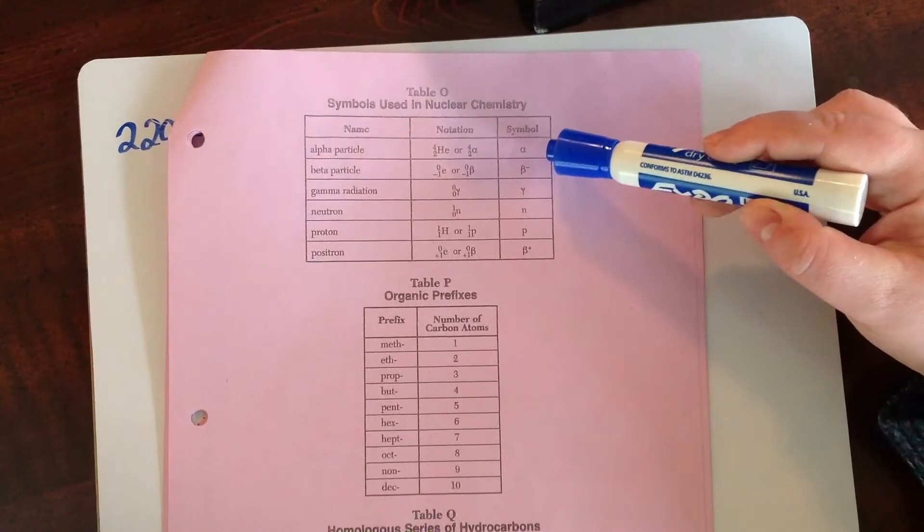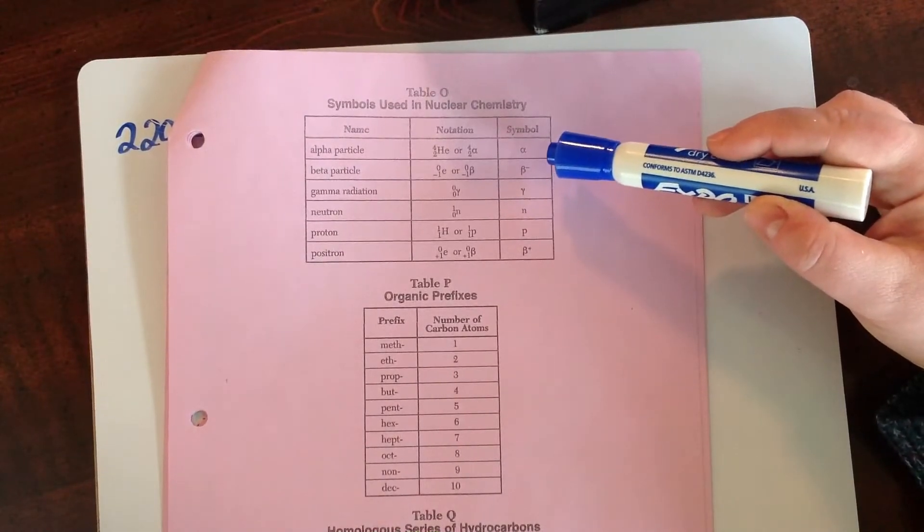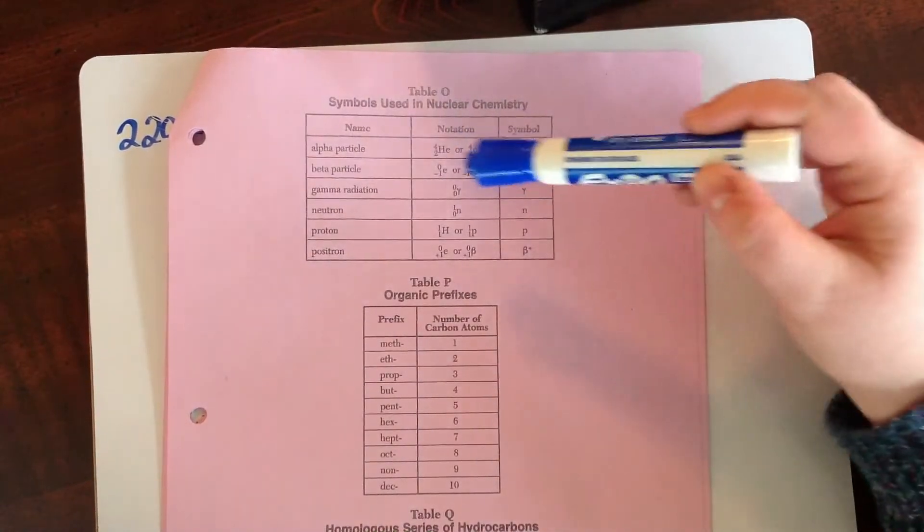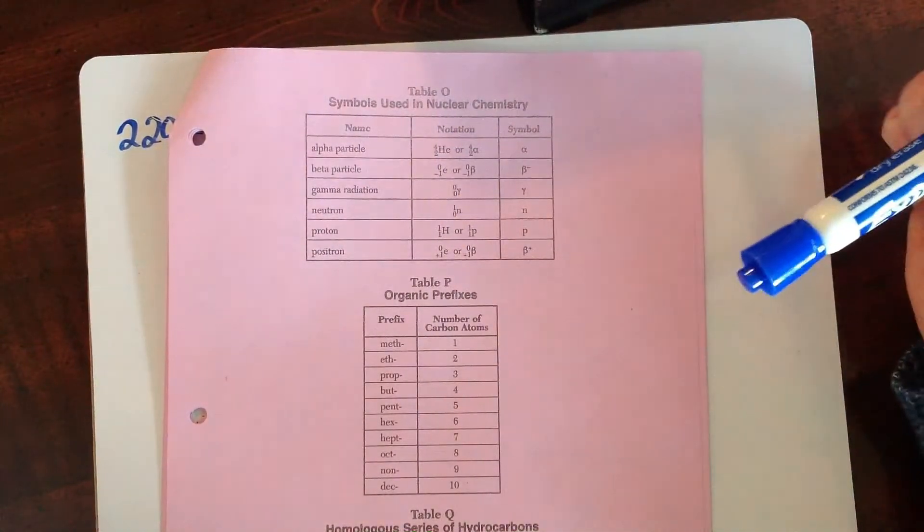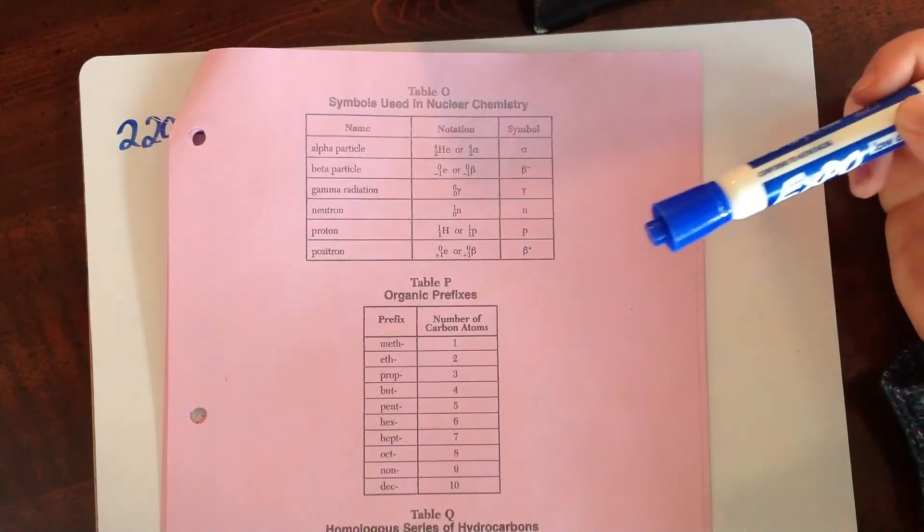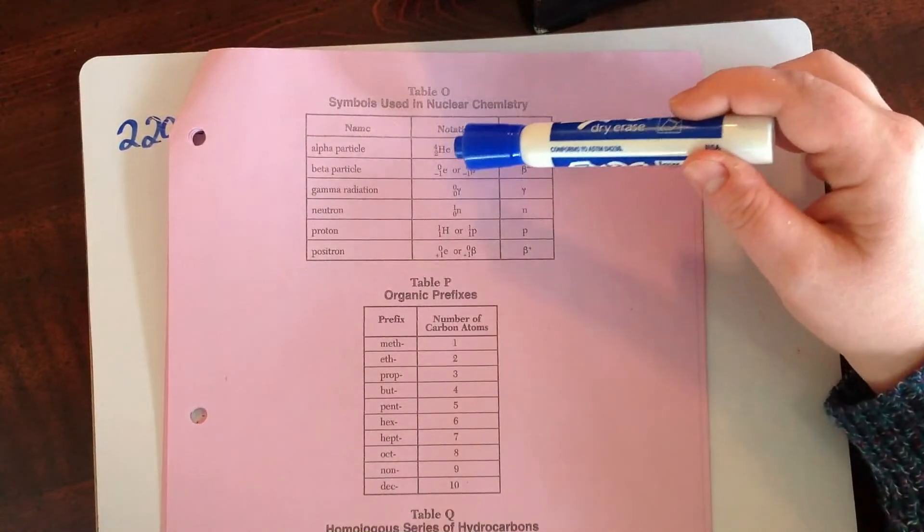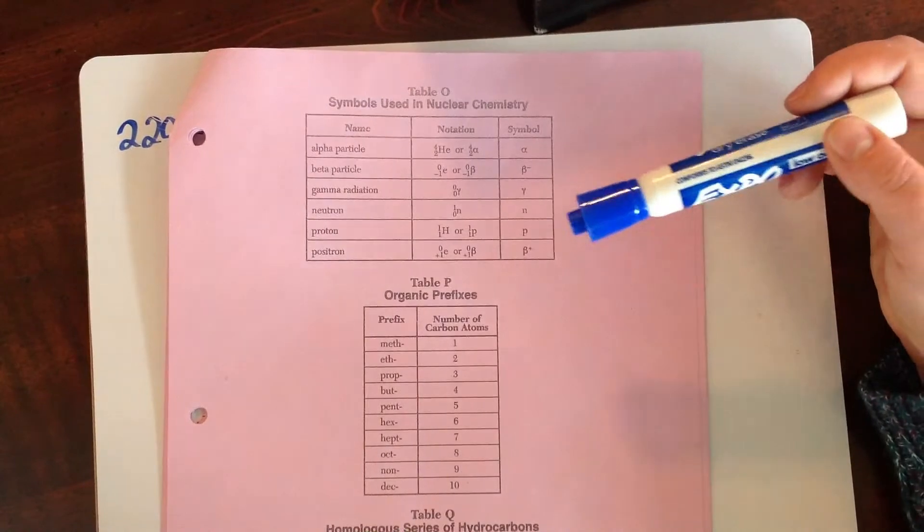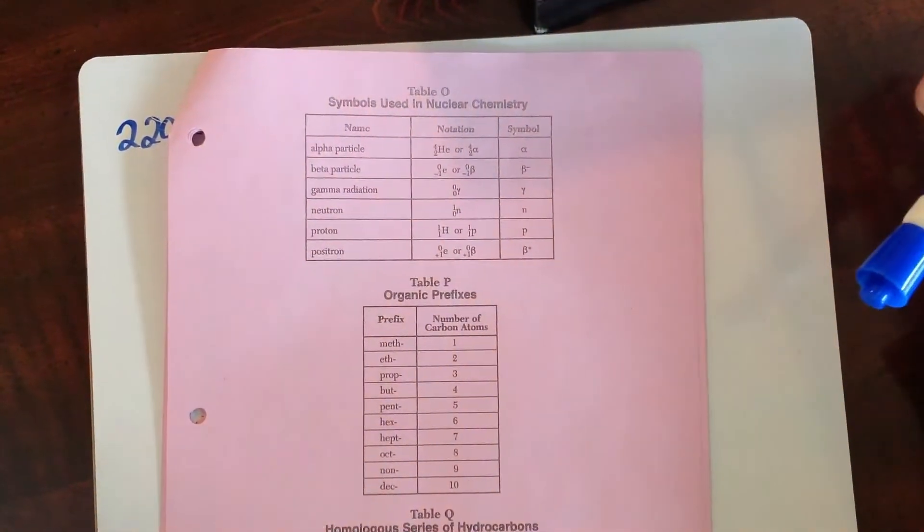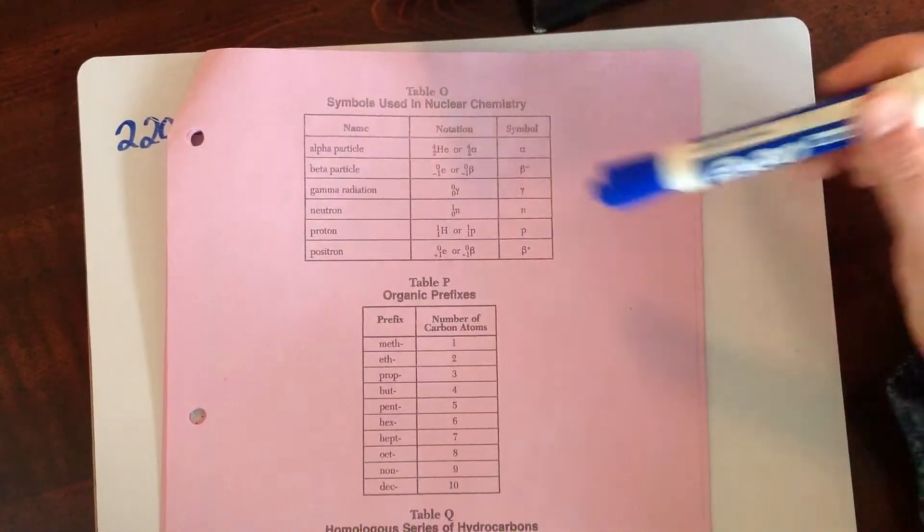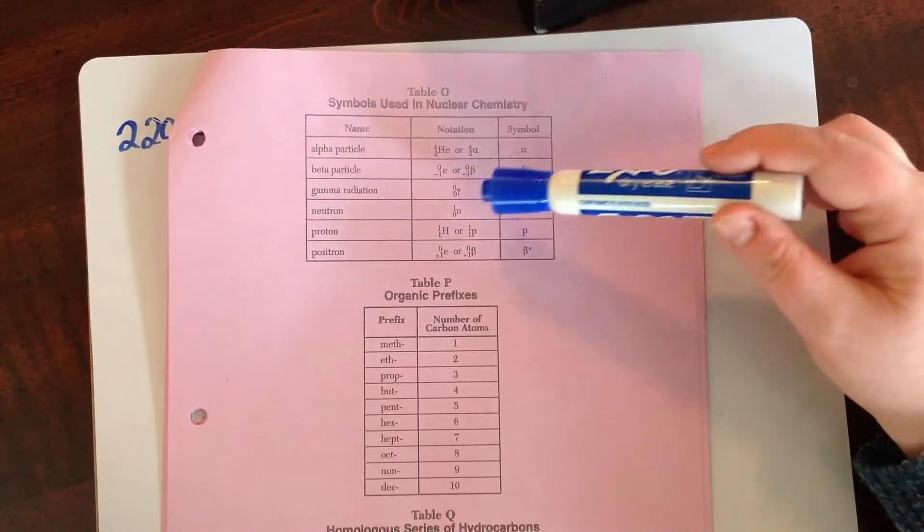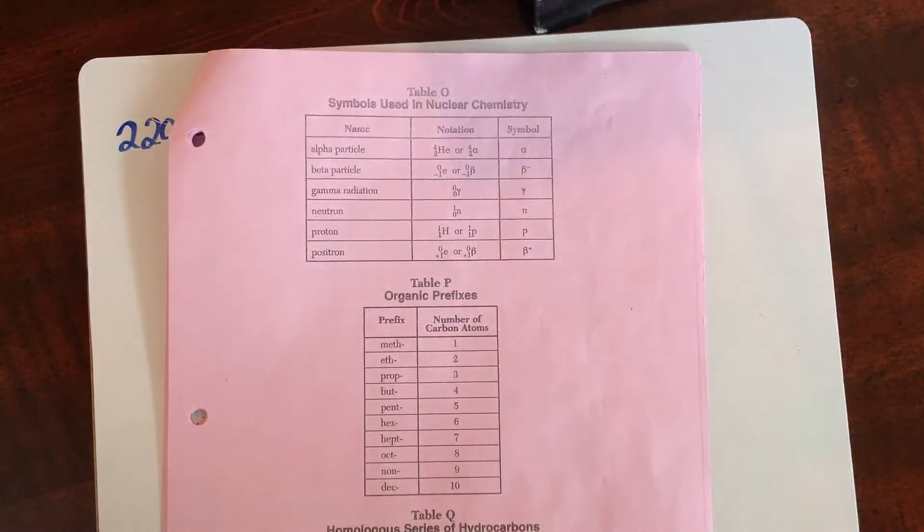The beta particle is essentially an electron, sort of. So it's got the symbol of an electron, and we've got the negative 1 for the charge of the electron, kind of like the atomic number is the positive charge on the nucleus of an atom, and a mass of 0. Gamma radiation is just energy. There's no mass or charge. So we've got those two little zeros there.